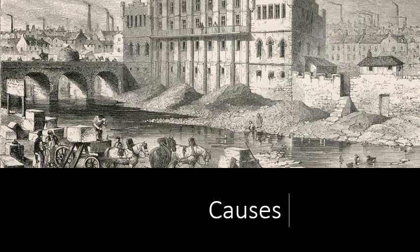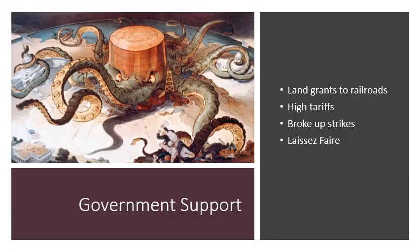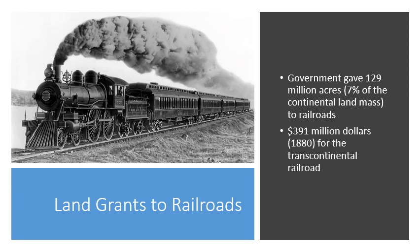The question becomes: what were the causes of this Industrial Revolution? One reason it grew so quickly in the United States was government support. The government had land grants to railroads, enforced high tariffs, broke up strikes, and used a system known as laissez-faire. The government gave 129 million acres — basically 7% of the continental land mass — to railroads, equaling $391 million in land, which allowed railroads to grow and drive industry along the way.